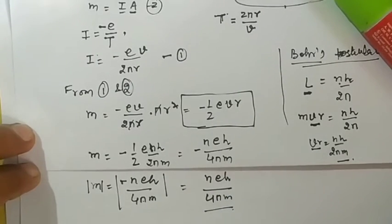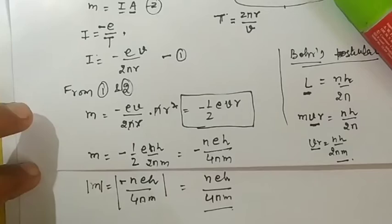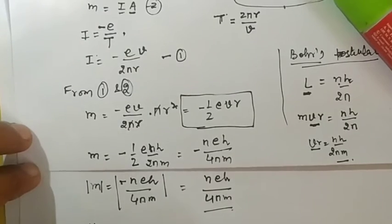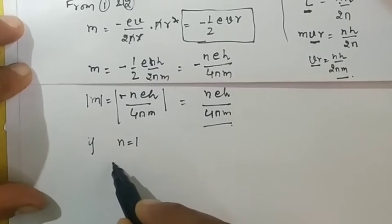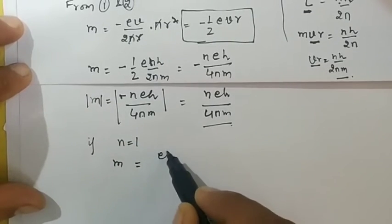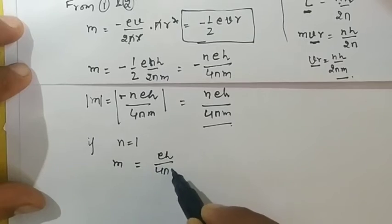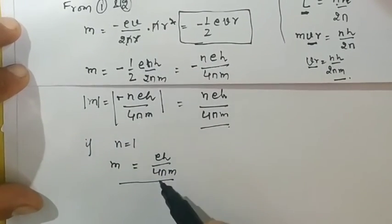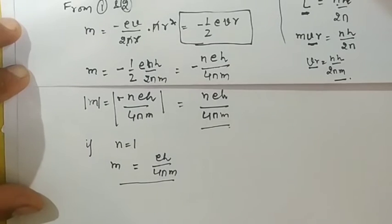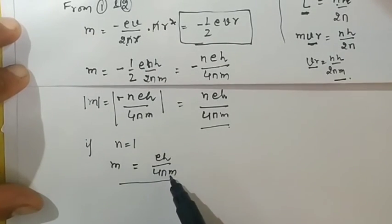The negative sign tells only the direction of magnetic dipole moment of an electron. If I put n equal to 1, then the magnetic dipole moment becomes eh/4πm. This term eh/4πm contains all constants.